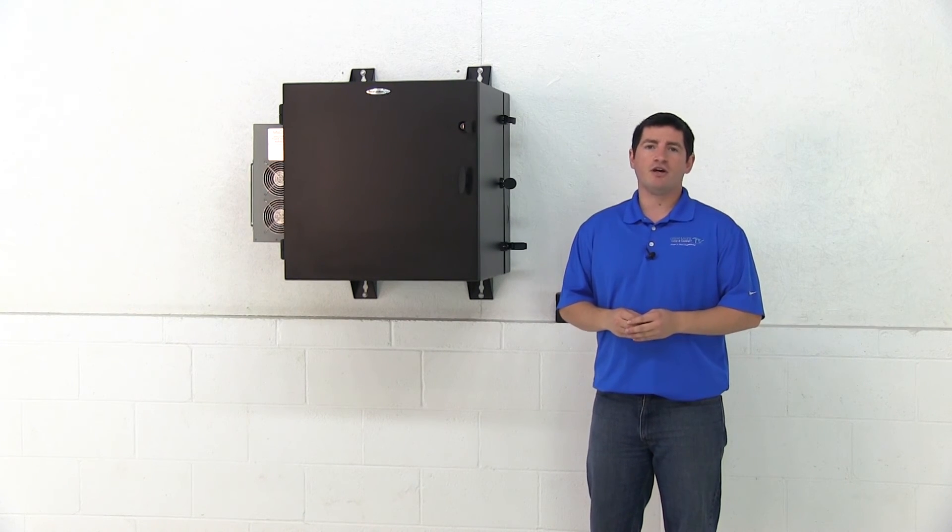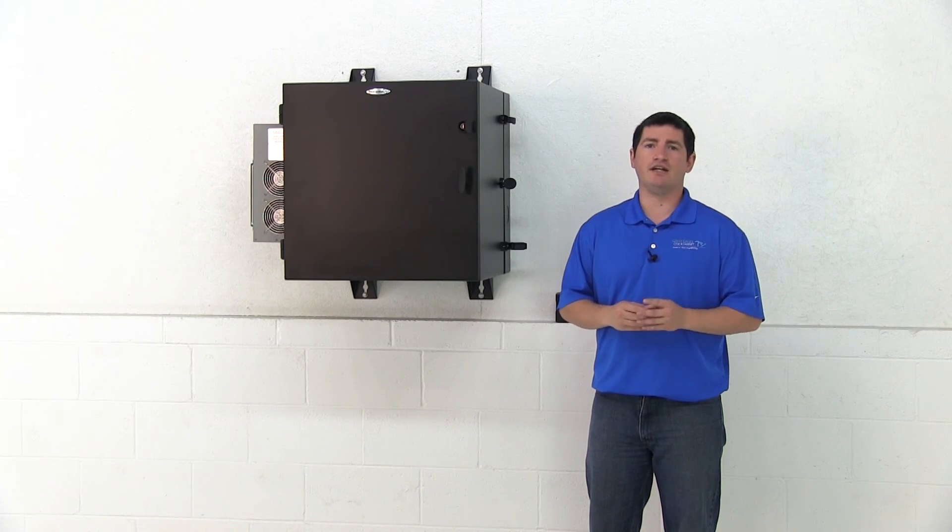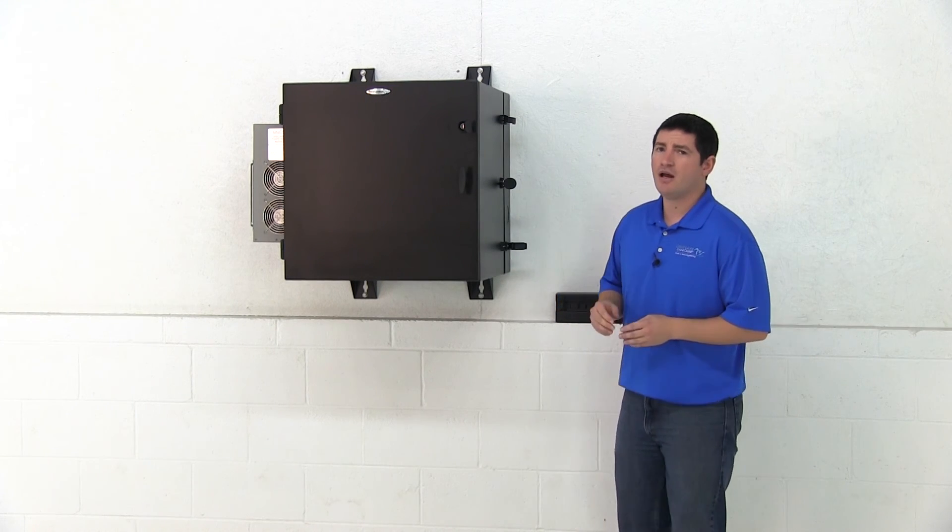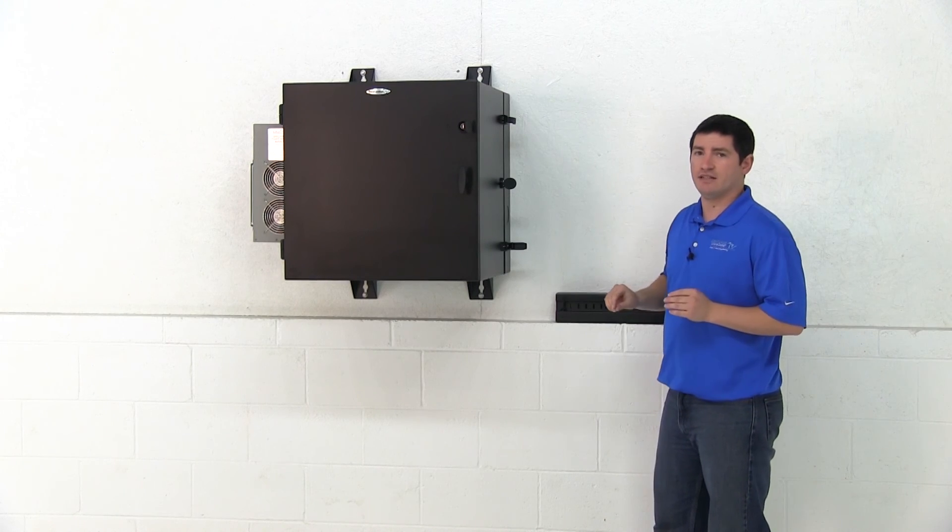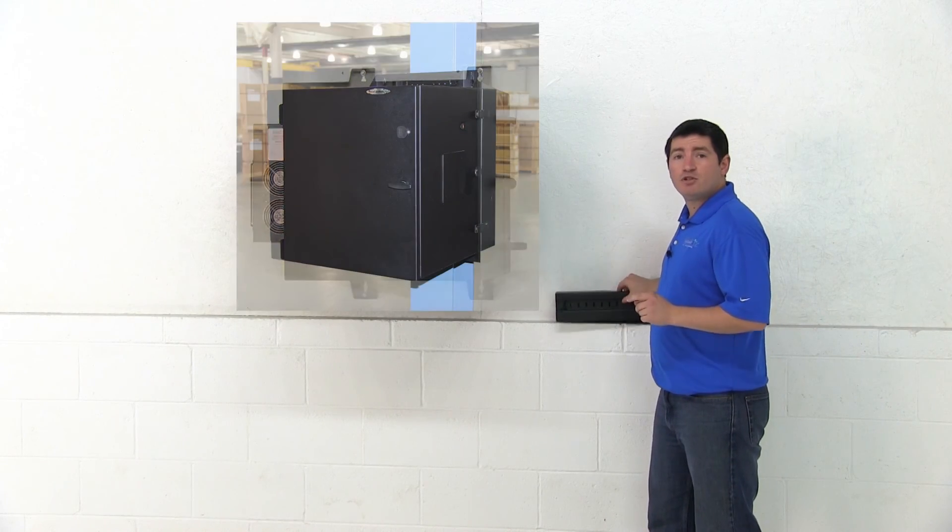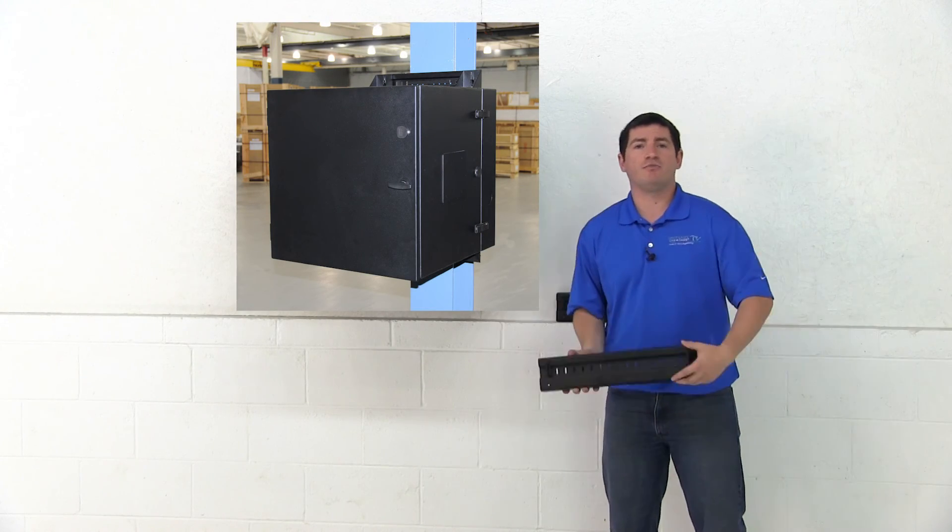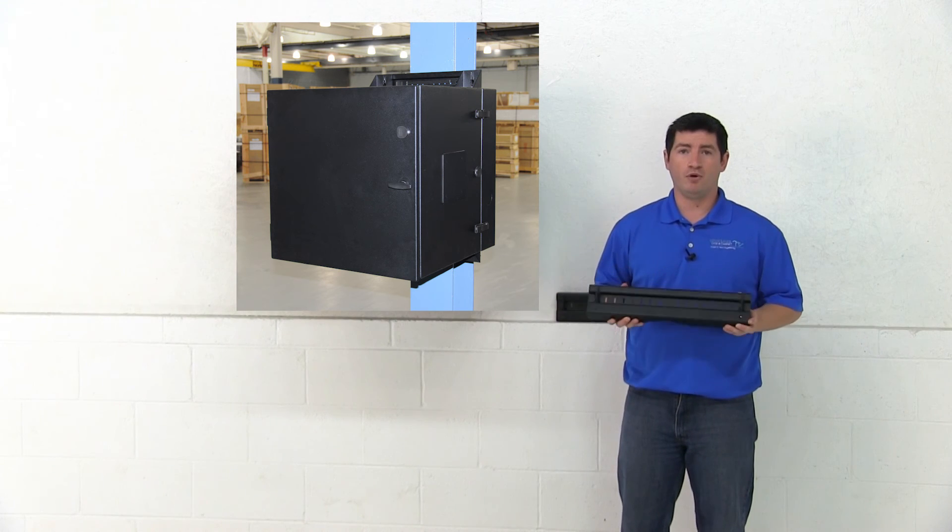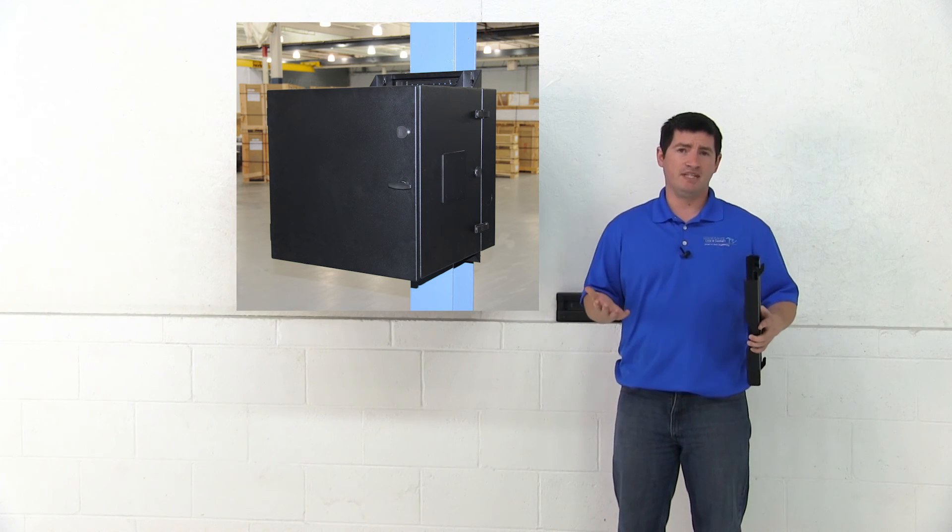NEMA 12K wall mounts are ideal for warehouse and other high dust environments. However, mounting to a wall is not always convenient. In these cases, NEMA 12K wall mounts can be mounted to poles with Great Lakes Wall Mount Pole Kit or WMPK.